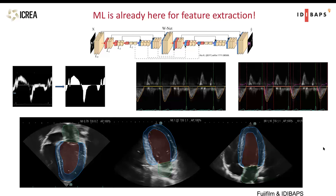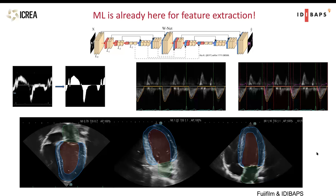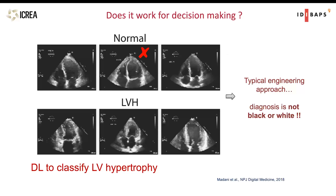For each part of this clinical decision-making pipeline, we can try to use machine learning to improve. The first is image or data acquisition, especially feature extraction. What has been shown is that when we use deep learning here, we can really automate measurements, make life much easier for the clinician, and actually make results even more reproducible. This is already available and being used in many systems.